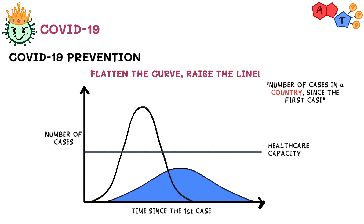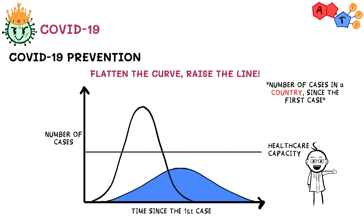Flattening the curve will maximize the number of COVID-19 patients receiving appropriate care and reduce the overload on the healthcare system. While you're doing your best, healthcare staff are working tirelessly to raise this capacity threshold — by adding more beds, more staff, more ventilators, and so on.